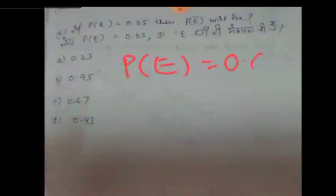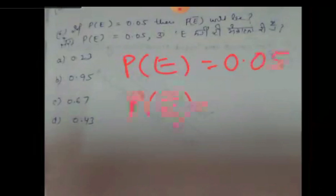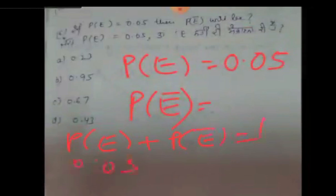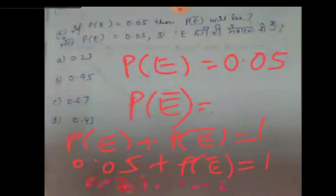Sixth sum: The probability of an event is given as 0.05. What will be the probability that the event will not occur? We know that P(E) + P(not E) = 1. Putting the value: 0.05 + P(not E) = 1. So P(not E) = 1 minus 0.05 = 0.95. Our answer is 0.95.